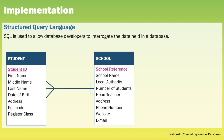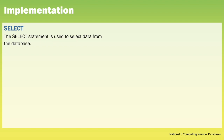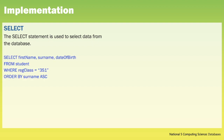Once we've implemented our database, we can use Structured Query Language to perform queries. SQL is used to allow developers to interrogate the data held in a database. A SELECT statement is used to select data from the database and contains four parts: SELECT identifying the fields we want to display, FROM the table we are selecting from, WHERE the conditions that we want to be met, and ORDER BY — how do we want the results to be sorted? In this example we are selecting first name, surname and date of birth for all students who are in the reg class 3S1, and the list will be presented in surname ascending order, which is alphabetical.